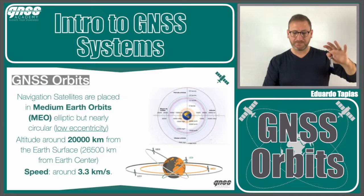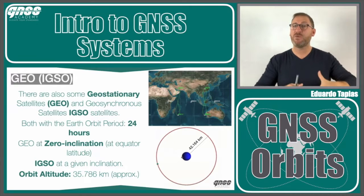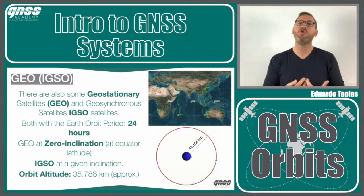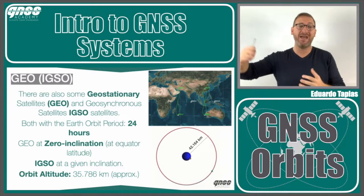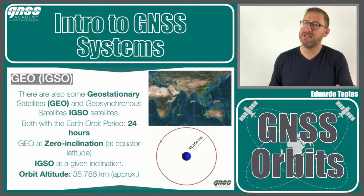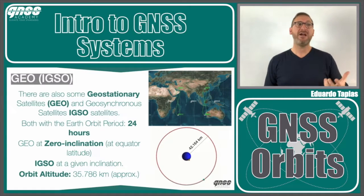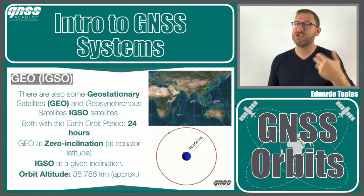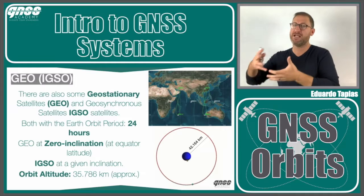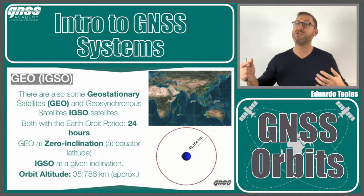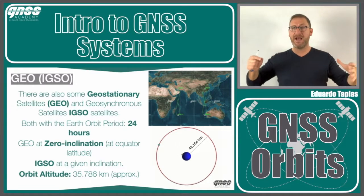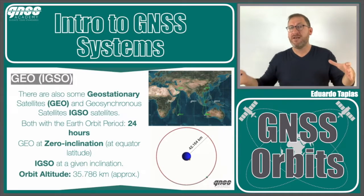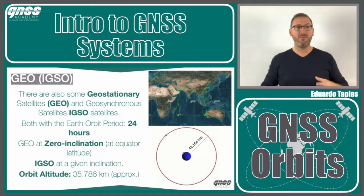We also have regional constellations that are not only using MEO orbit satellites at 20,000 kilometers. They also use geostationary satellites for positioning, as well as IGSO satellites, which are geosynchronous satellites. Both geostationary and IGSO satellites have a period of 24 hours. The geostationary is fixed at an equatorial latitude, while the others have an inclination but still a period of 24 hours.